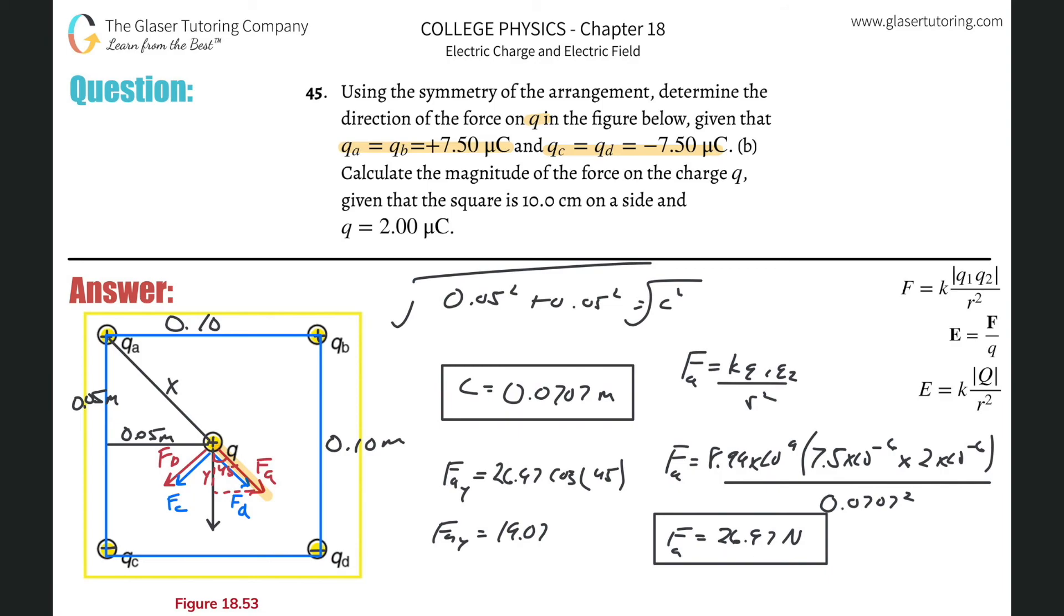Now, remember that this is only one of them, but all four of them will have the same Y components pointing in the same exact direction, so we're going to take this bad boy, multiply it by four, and now we're going to find the total force. So take that, multiply it by four, and what do we get? 76.3. So 76.3 Newtons, and that is the total force.